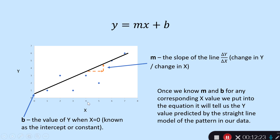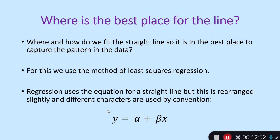Once we've fitted this model, we can use it to predict. For example, for an x value of 3, we look at 3 on the x-axis, go up to the line, then read across — it predicts a y value of roughly 3. This raises an important question: where is the best place for the line? What we use here is something called the method of least squares, or least squares regression.